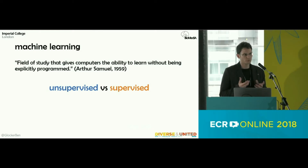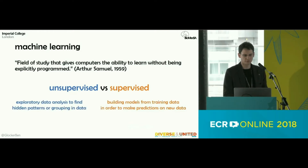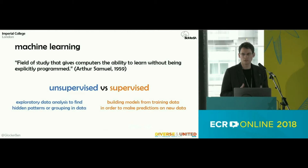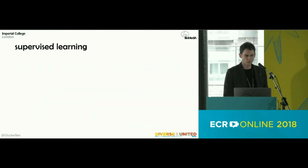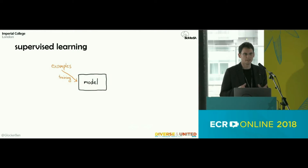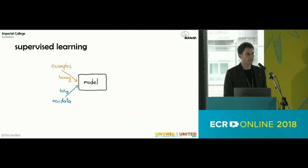Almost everything you currently read about AI and new applications falls in the domain of supervised learning, where we build models from training data. We expose a lot of annotated data to our models, which get adapted to perform a specific task. The model is at the center — you collect training data, give the model examples of what it should do, and hopefully it can later make sensible predictions on new data.